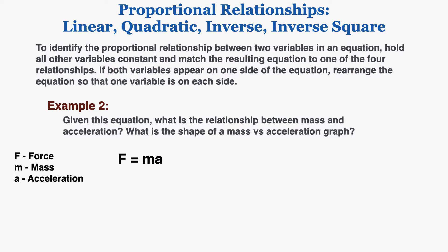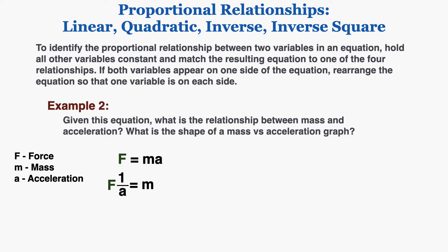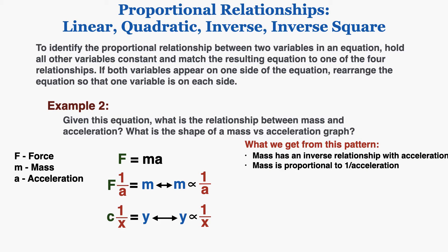Example two: given the same equation, what is the relationship between mass and acceleration, and what is the shape of a mass versus acceleration graph? We hold force constant and isolate mass by dividing both sides by acceleration. This fits the form y = k·(1/x), meaning y is proportional to 1 over x. So mass is proportional to 1 over acceleration — mass has an inverse relationship with acceleration — and the graph of mass versus acceleration takes the shape of an inverse curve.